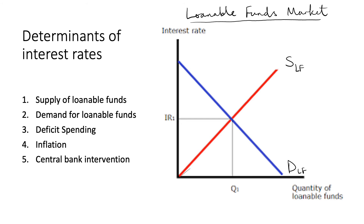Next we have inflation. Inflation can also affect interest rates because the higher the inflation rate, the more the purchasing power of the money received by savers erodes over time. To compensate for this, lenders will demand higher interest rates to effectively balance this loss in earnings. Central bank intervention is also a factor — by using monetary policy to increase or decrease the supply of money in the economy, or by altering bank rates, which is the interest rate charged by the central bank on loans to commercial banks, central banks can affect changes in interest rates that percolate through the economy, impacting interest rates on loans, mortgages, and other credit.